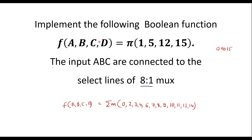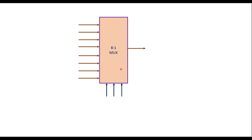Implementation of this max term function is the same as implementation of this min term form. Here it is said that a, b, c are connected to the select lines of the 8-to-1 MUX. Let me show you the block diagram of the 8-to-1 MUX. For an 8-to-1 MUX, we have 8 inputs and 3 select lines. Here a, b, c should be considered as select lines. The inputs are labeled D0, D1, D2, D3, D4, D5, D6, and D7.